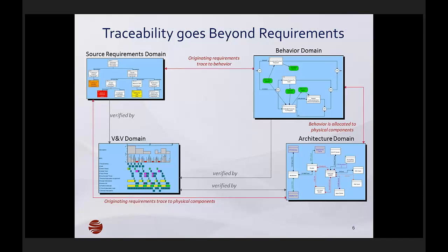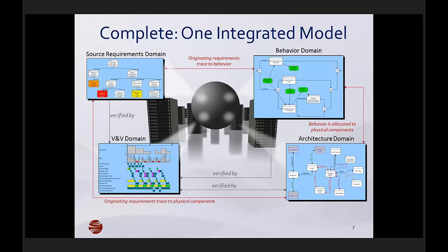As we develop these various views of the system — these various models — they of course have to tie together. Those relationships represent the totality of the traceability of the systems engineering effort. Functions are based on requirements, and components perform various functions. Everything has to be verified and validated. Here at Vitech, we include all these different aspects of systems engineering in a common shared repository, which allows all team members to access all of these different types of systems engineering data concurrently.